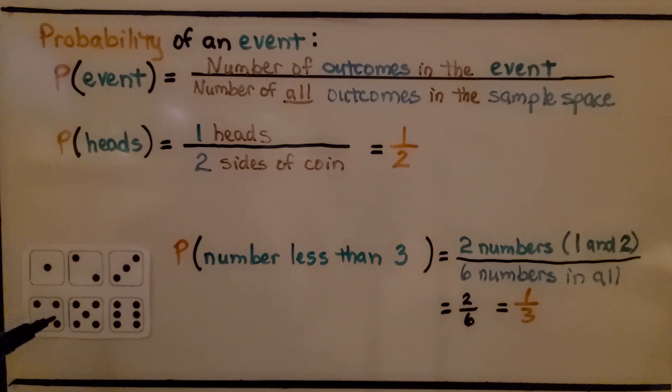For rolling a number cube, a die, the probability of rolling a number less than 3. So it can't be 3, it's less than 3. So that means it's either a 2 or a 1. It's either one of these two, isn't it?